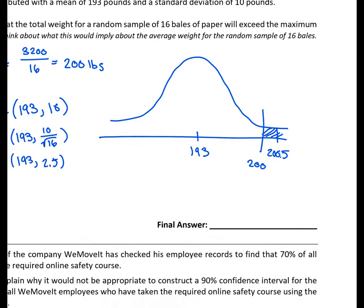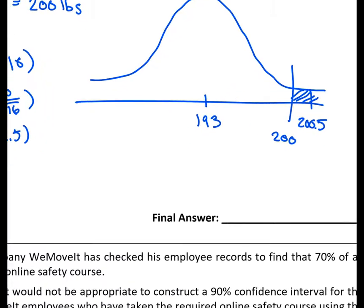Well, we've got a normal distribution, so we can calculate our z value. So we've got z is equal to our observed value of 200, the mean of our distribution 193, and the standard deviation of our distribution, which is 2.5. If we carry out that math, you'll get a value of 2.8.